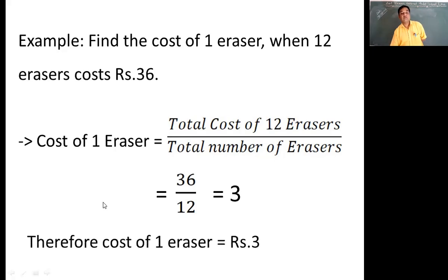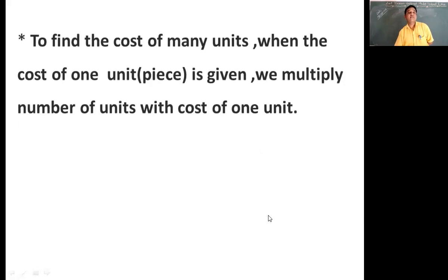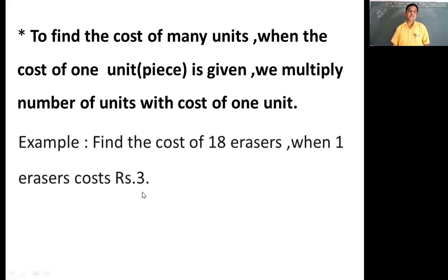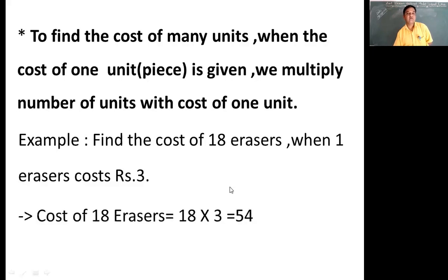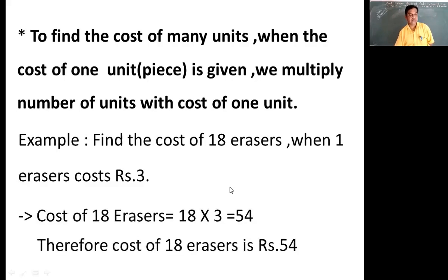Now if we find out that the cost of one eraser is 3 rupees, then we can find the cost of as many erasers as we want. To find the cost of many erasers we are going to multiply the cost of one with the given number. Taking the same eraser example: if we have to find the cost of 18 erasers when the cost of one eraser is 3 rupees, we multiply 3 by 18 and get 54 rupees as the cost of 18 erasers.